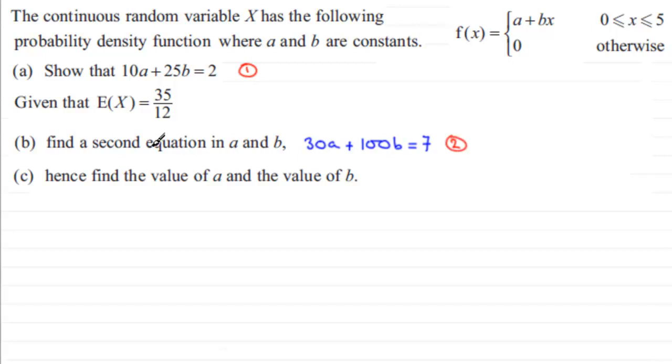So what I'm going to do, and there's many ways that you can solve these simultaneous equations, but what I'm going to do is take equation 1 and multiply it by 4, so I can bring the B term up to 100.